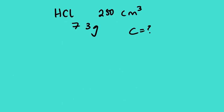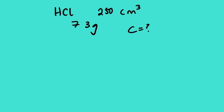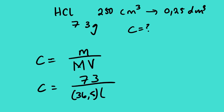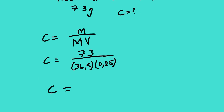Let us look at another example. In this question we are looking for the concentration of hydrochloric acid. The mass is 73 grams and the volume is 250 cm³, the same as 0.25 dm³. Using C = m/(M×V): C = 73 divided by 36.5, divided by 0.25, so C equals 8 mol per dm³.